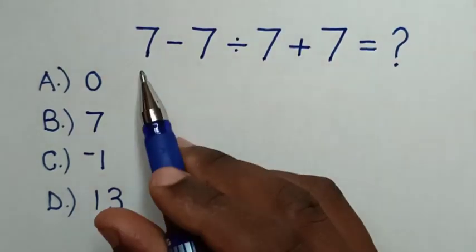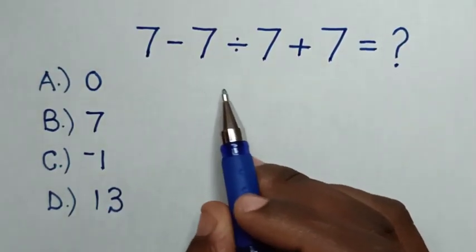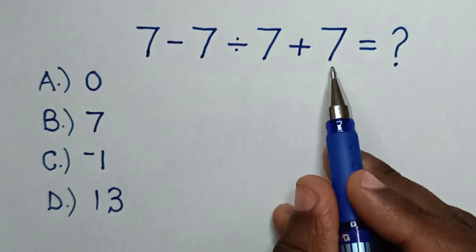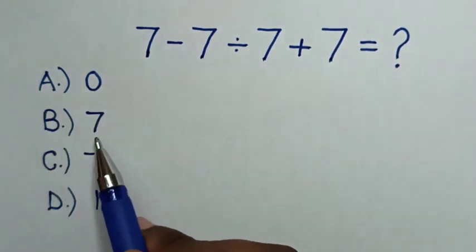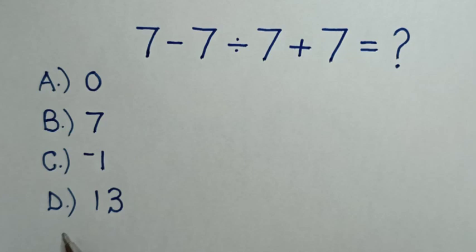Hello. 7 minus 7 divided by 7 plus 7. Select between the answers: A, 0, B, 7, C, negative 1, D, 13.